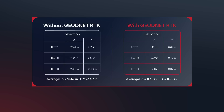Now let's look at the same test without RTK enabled. The accuracy dropped considerably, with deviations increasing to several inches away from the original point. That's a noticeable difference in precision, with average deviations greater than 10 inches in both the x and y coordinates during our tests.